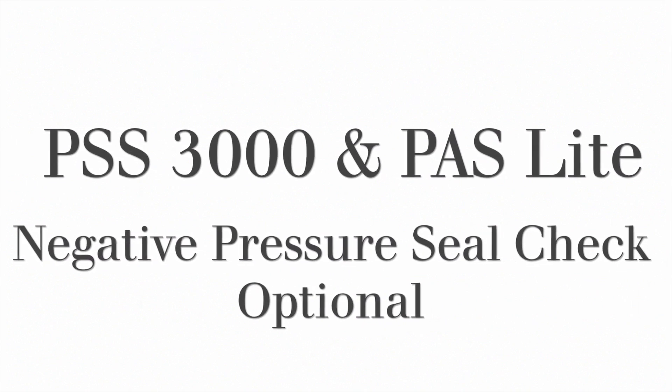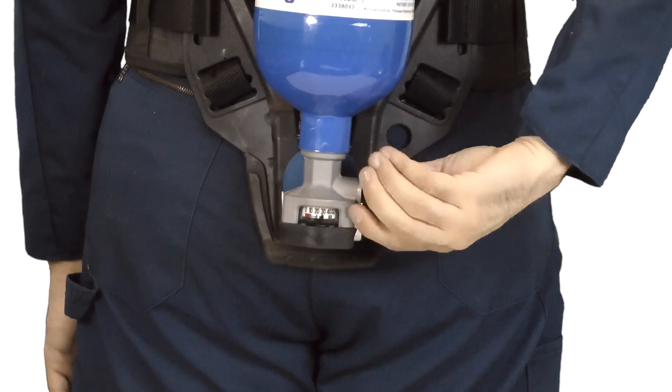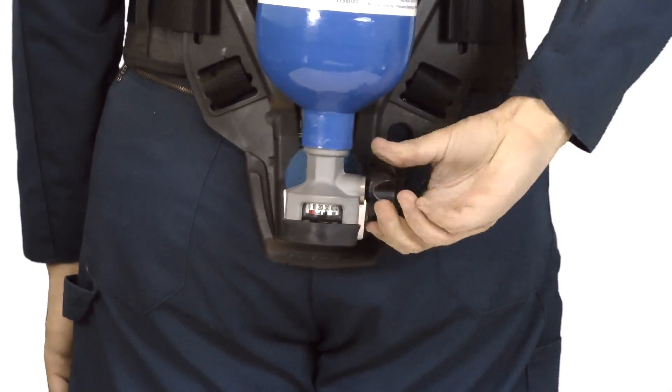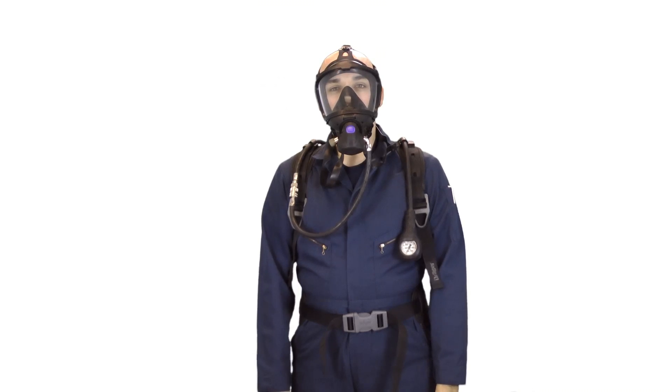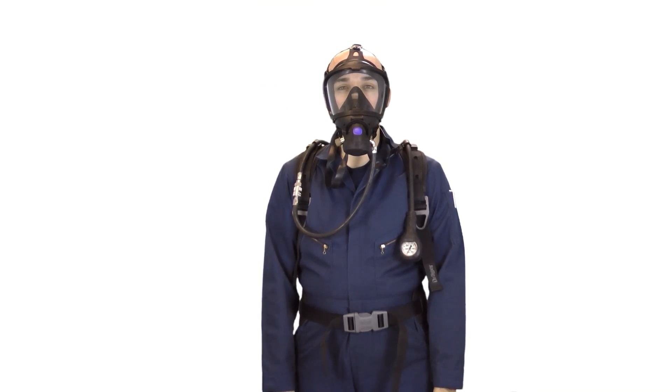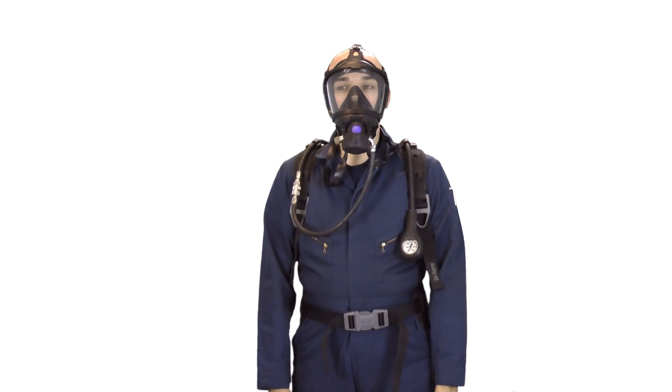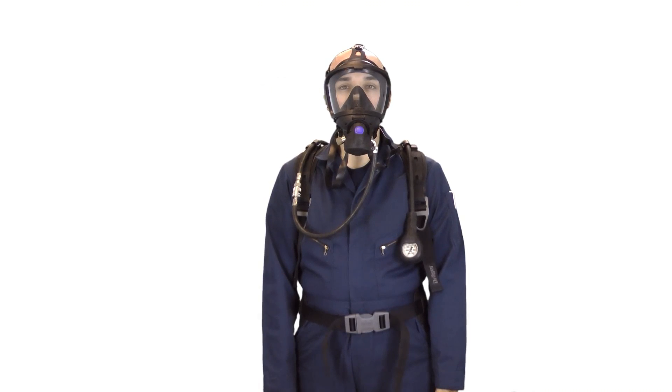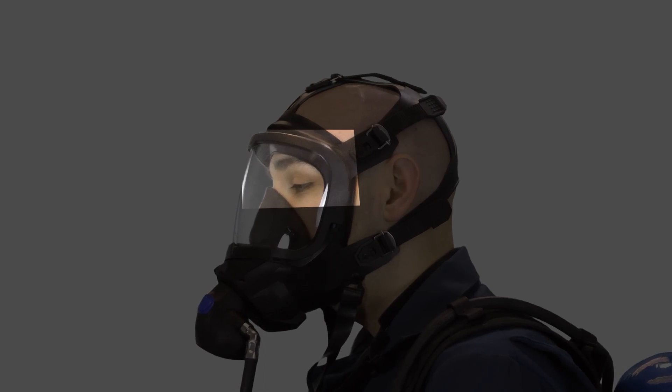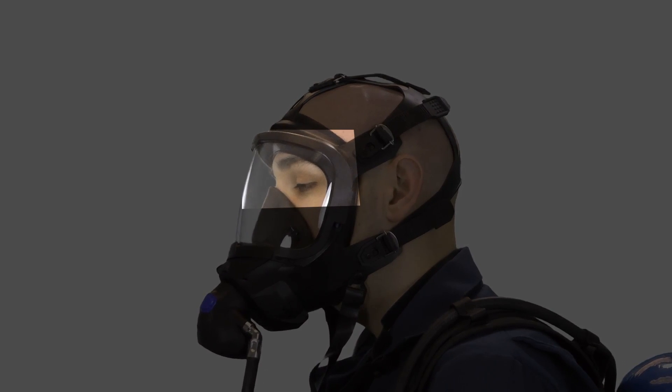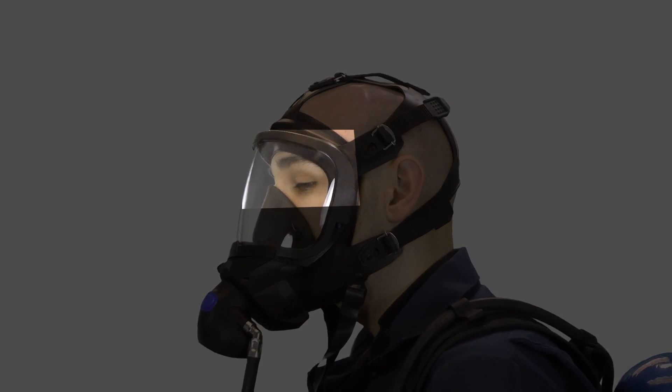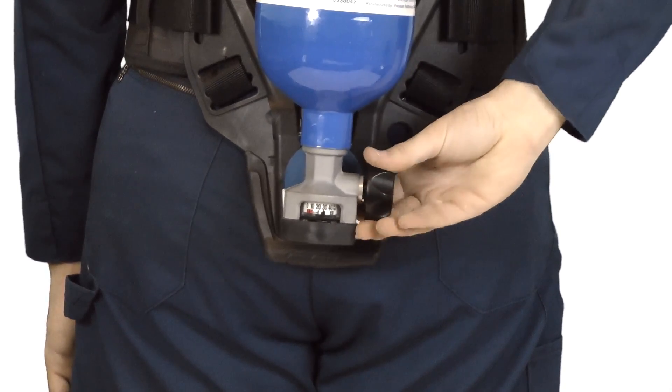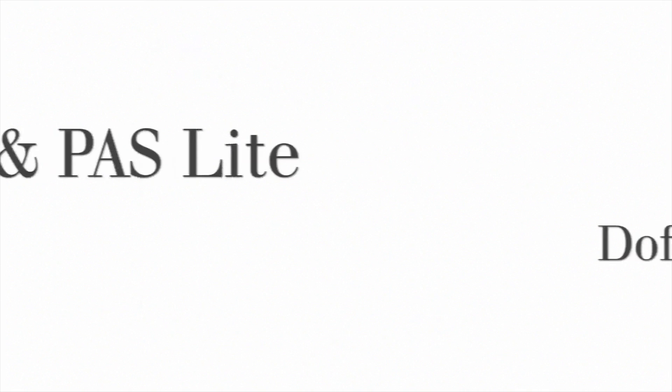Alternatively, you can perform a negative pressure seal check. Begin by turning the cylinder off and breathing the remaining air through the system. Once the air is depleted, inhale several times. The mask should collapse slightly against your face as you inhale. You can then open the cylinder valve to resume usage.